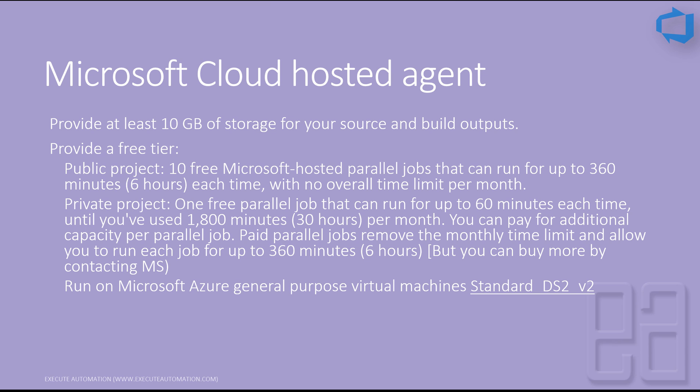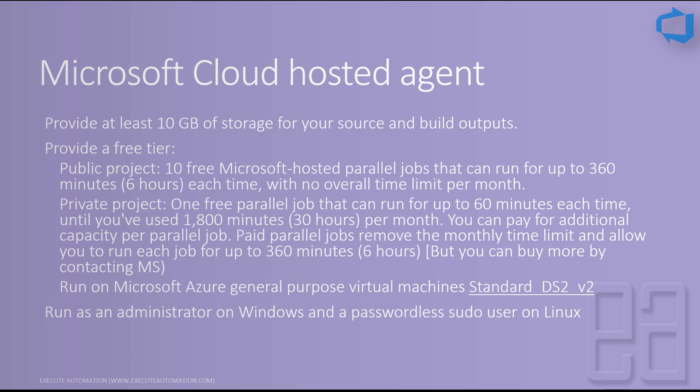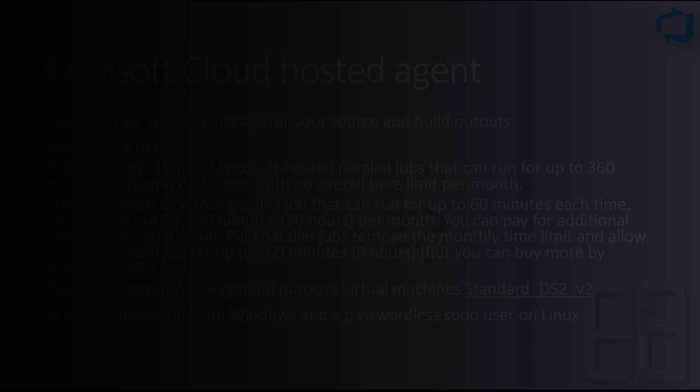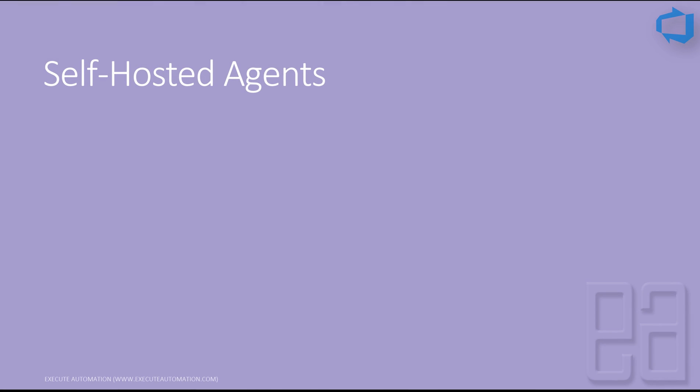You can request additional capacity per parallel job by contacting the support team, but there is a cost involved. The Microsoft cloud hosted agent runs on the Microsoft Azure general-purpose virtual machine Standard DS2v2. If that specification is not sufficient, the better option is to go with a self-hosted agent.